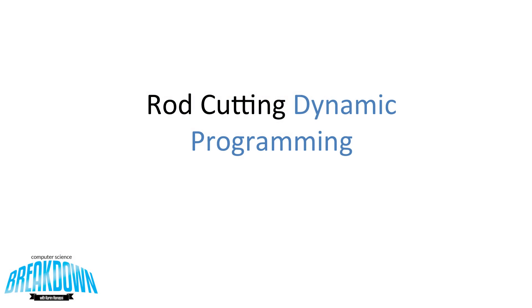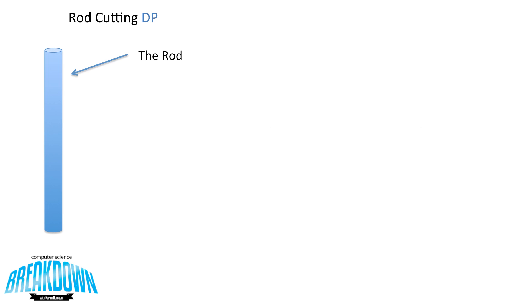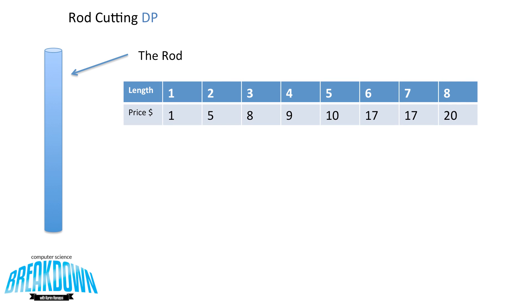Hi, and thanks for joining us. Today we're going to talk about the rod cutting dynamic programming algorithm. Given a rod of length n units and the price of all the pieces smaller than n, let's find the most profitable way of cutting the rod. So let's say we have this rod here and the following prices for all the different sizes from length 1 to 8. We have a retailer that wants to maximize his profit by selling smaller pieces of the rod.